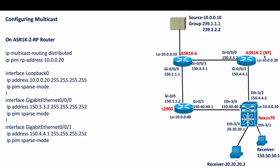On the RP router, ASR 1K-2, it's the same: 'ip multicast-routing distributed', then 'ip pim rp-address'. This is its local loopback, so it will assume the role of RP router. Again on the loopback and on the physical interfaces such as GigabitEthernet 0/0/0/1, we enable 'ip pim sparse-mode'.